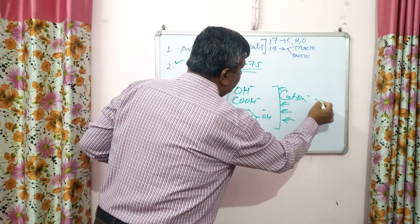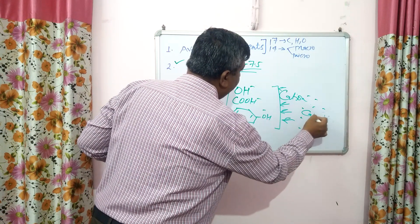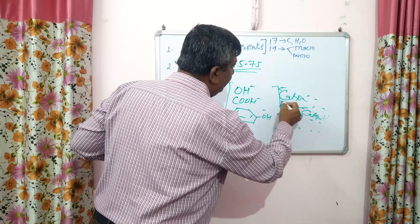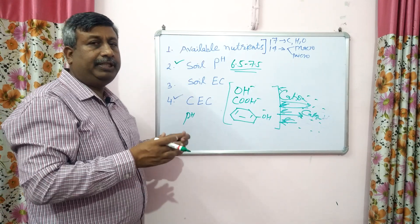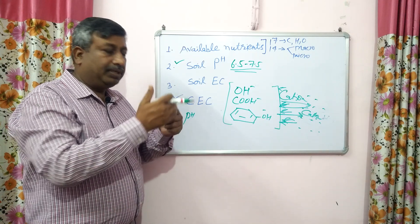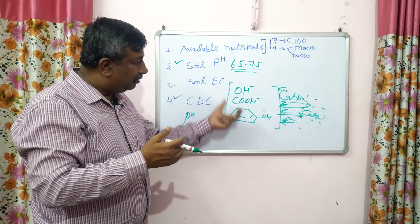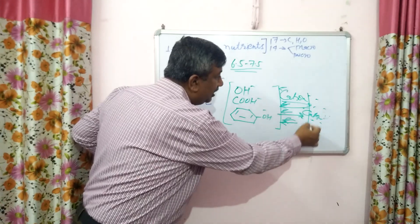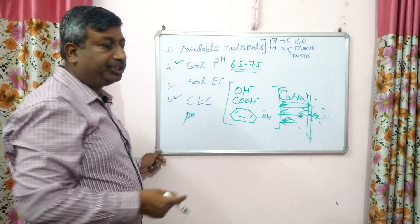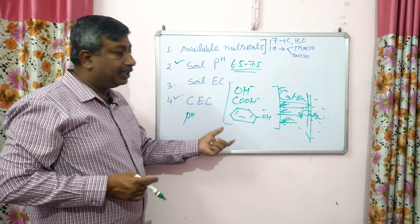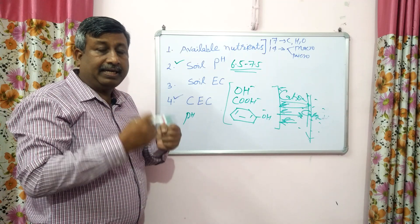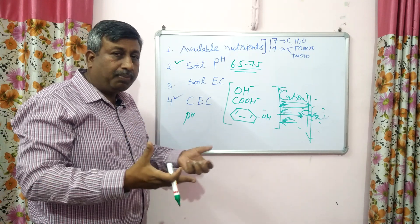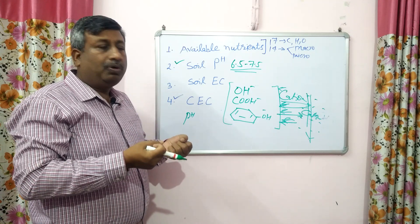The cations are attracted towards organic matter by electrostatic force. There is no tight covalent bond — it is an electrostatic bond, so cations are held in exchangeable form. If cations are present in soil solution, they are attracted towards organic matter and held in exchangeable form, and can come back into soil solution. There is a cation exchange between the organic matter and soil solution. This prevents the leaching, and because of more negative charges, more cations are held. So cation exchange capacity is very high in organic matter and humus.